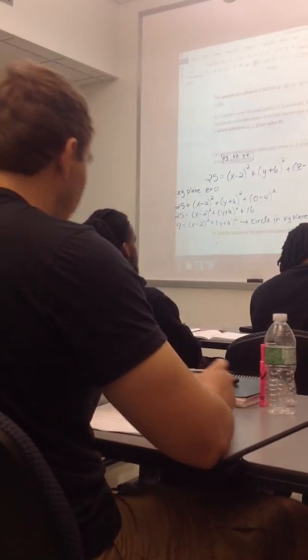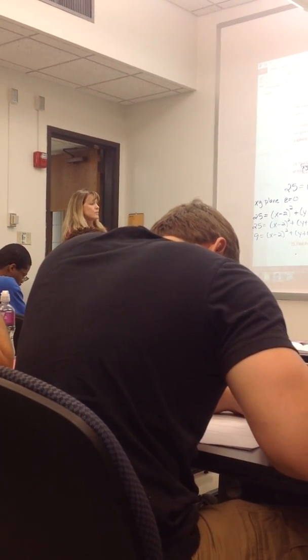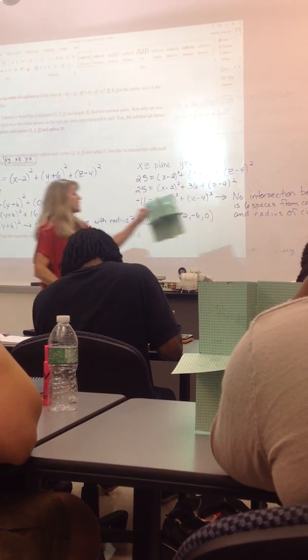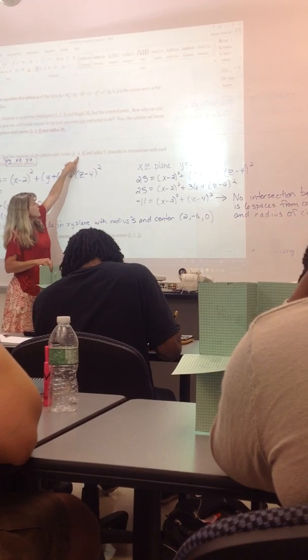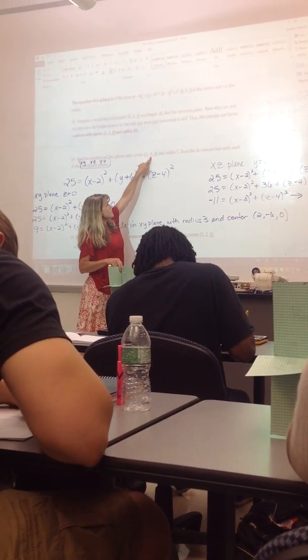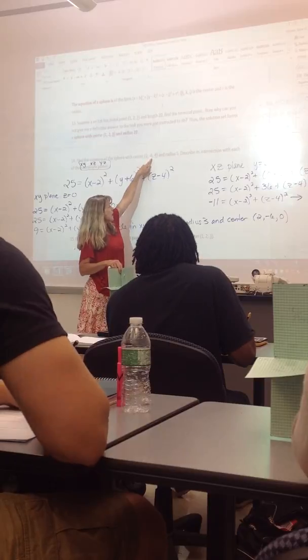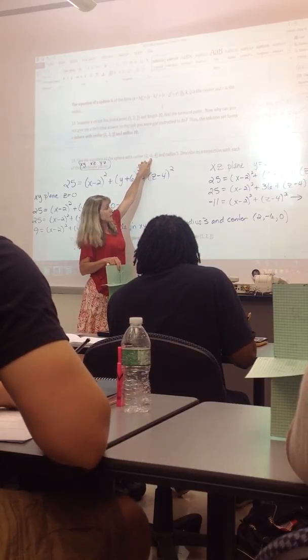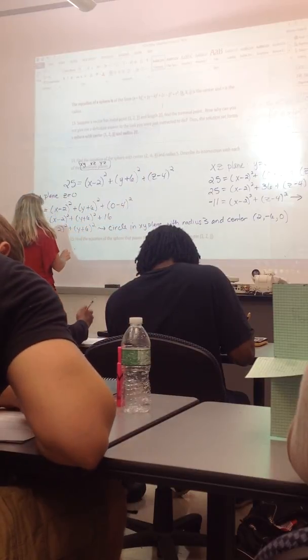The fact that it's negative though tells me that there's no intersection. Physically, there's no intersection because my sphere only had radius 5. And I didn't ask this on the quiz today, but I could add, how far is this point from the xz plane? It's a distance of 6 from the xz plane.